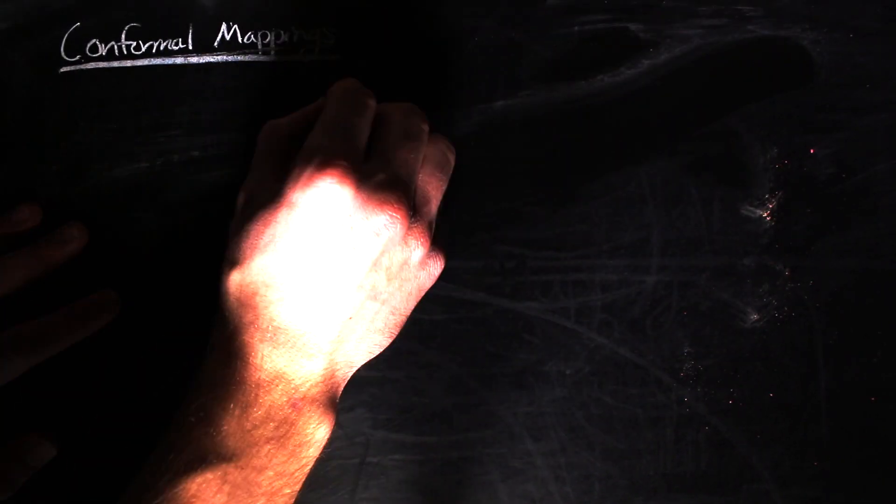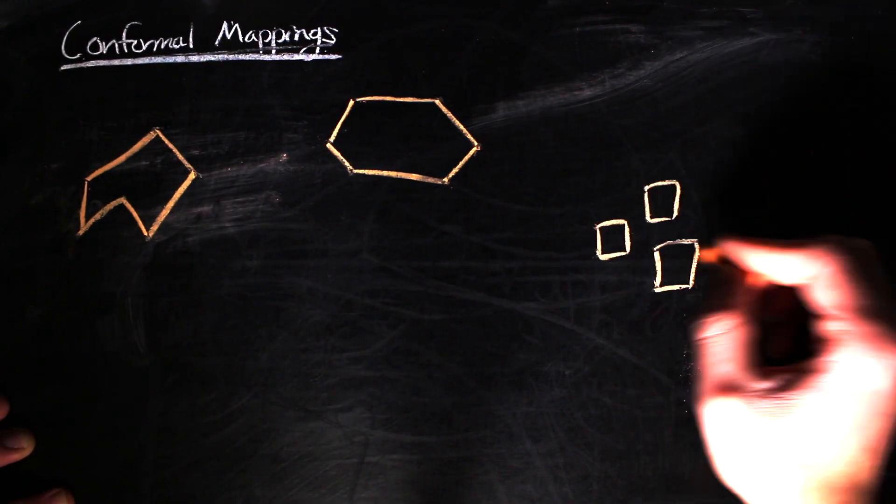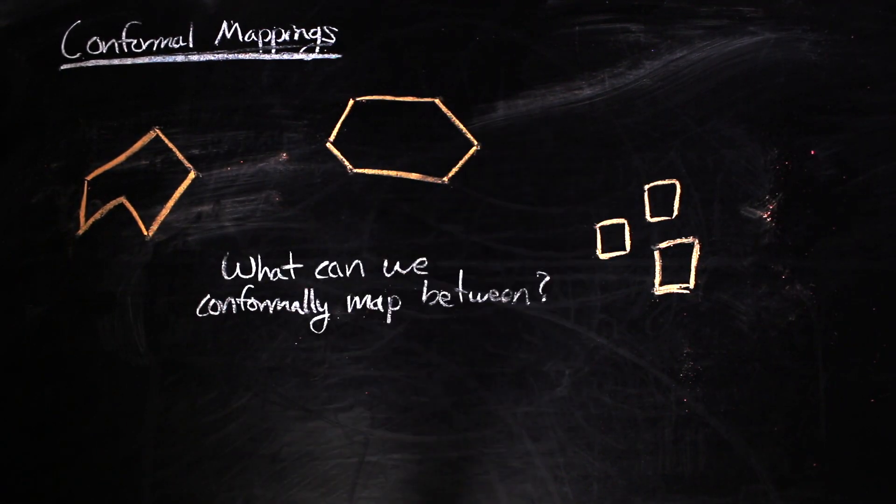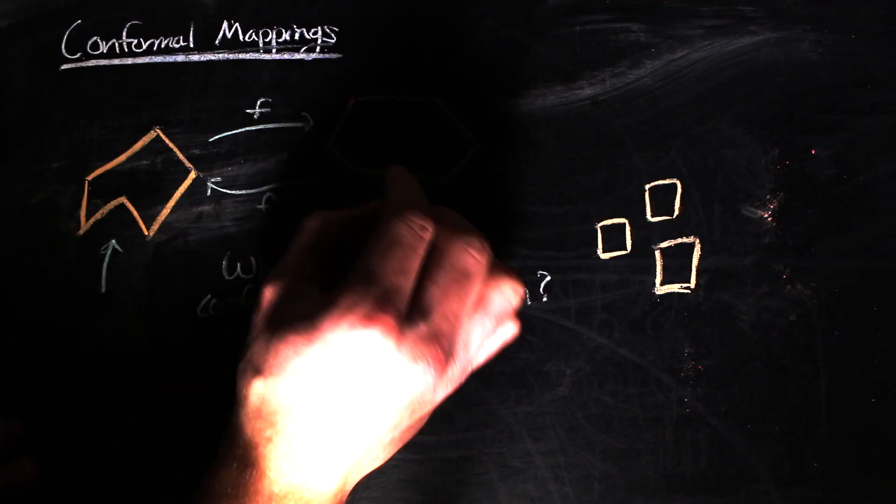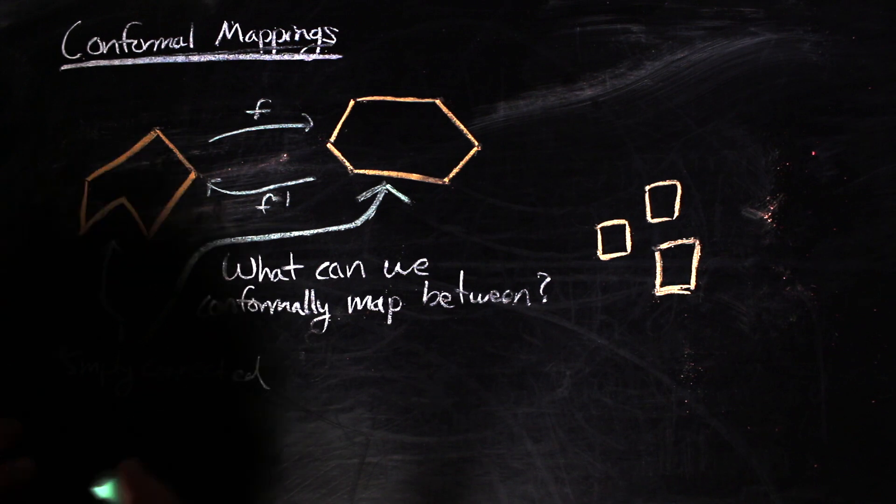So now that we know what conformal mappings are, what can we conformally map different regions of the complex plane to? Well, for any simply connected region, there is a complete answer. That is, you can conformally map that region to any other simply connected region.